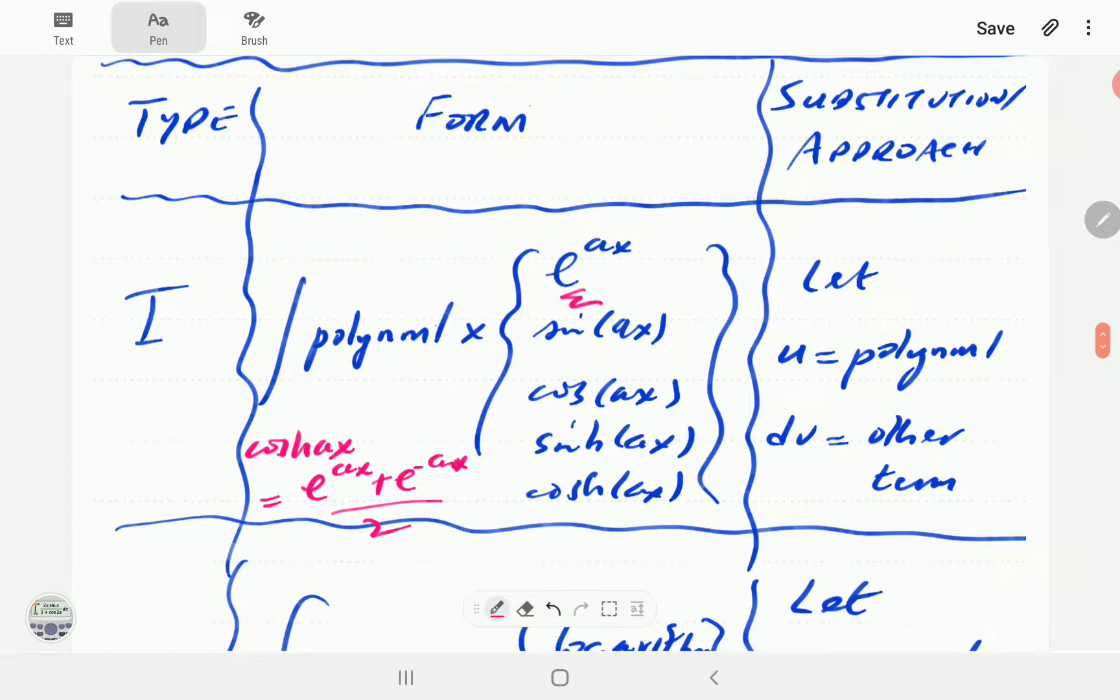The approach or the substitution we are going to use for these ones is always take the u to be the polynomial and then dv is going to be the other term. We are going to demonstrate this in the examples we're going to do in the next video.